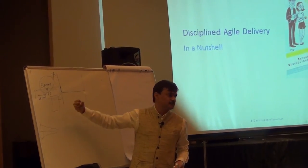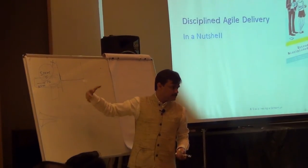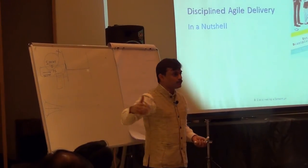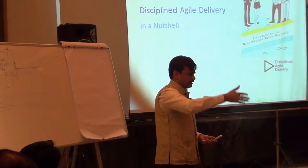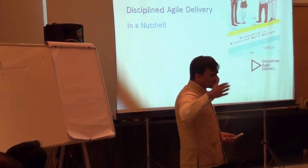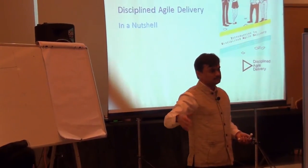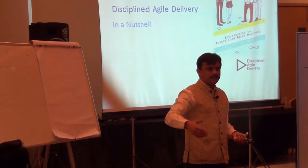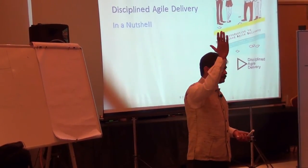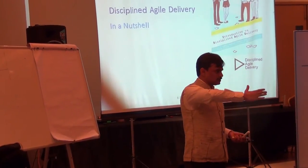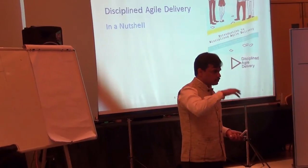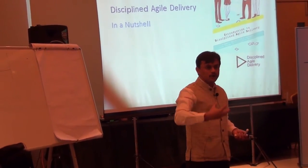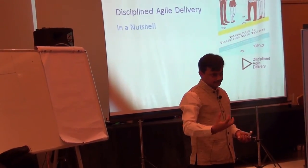And that is where Discipline Agile Delivery is coming. Discipline Agile Delivery takes care of your complete project life cycle. It starts from inception within the follow-up phases and it reaches till your UAT goes live. So it explicitly talks about those topics.